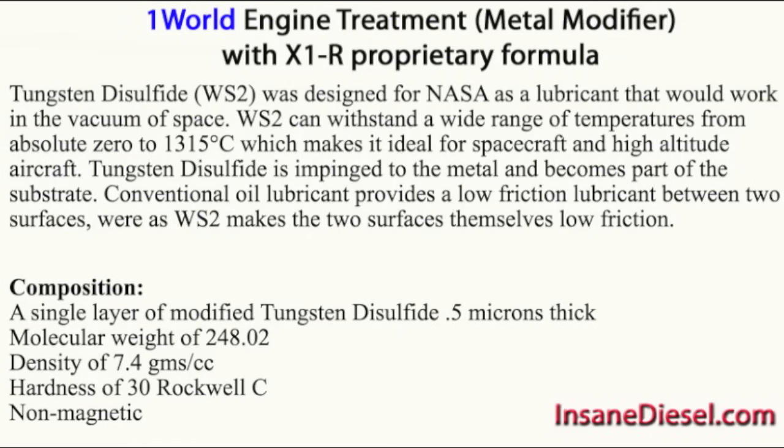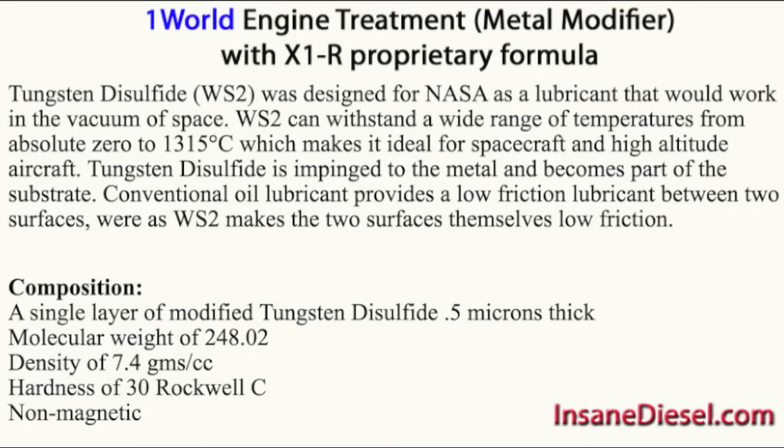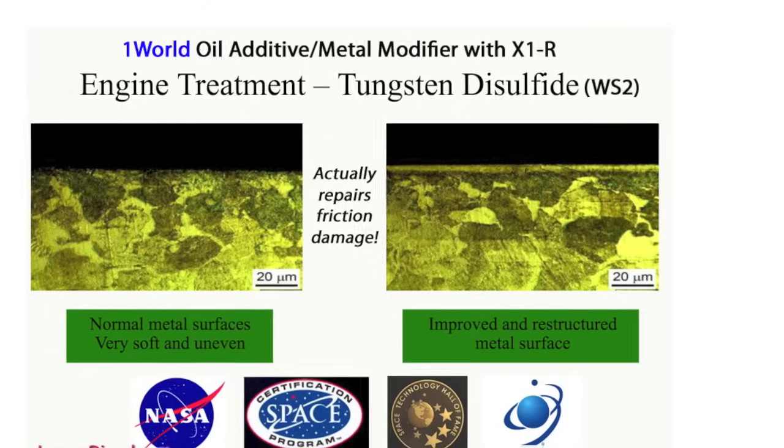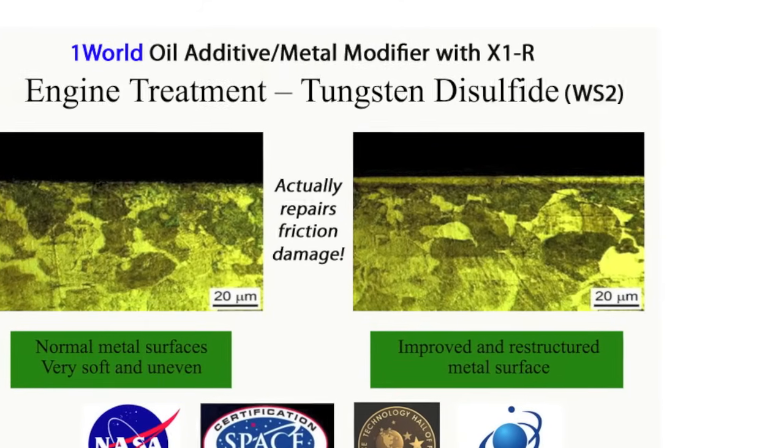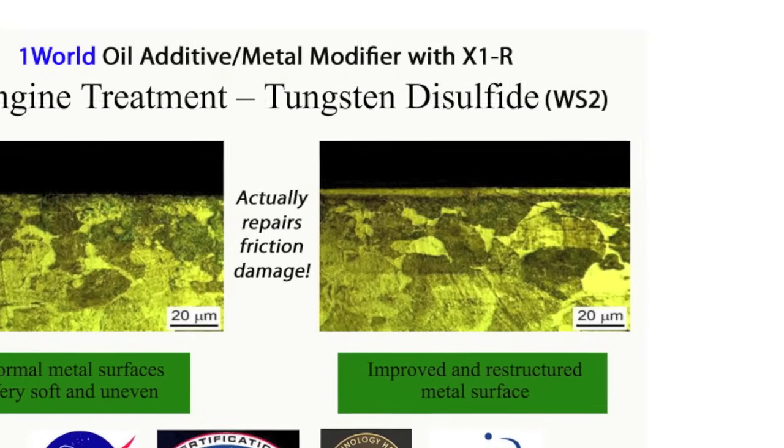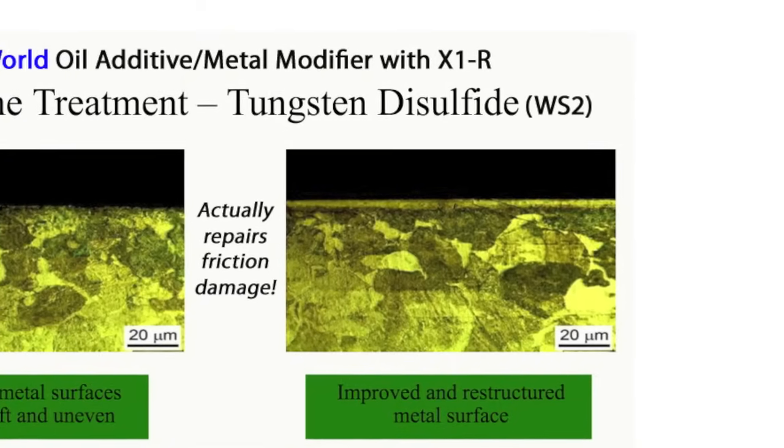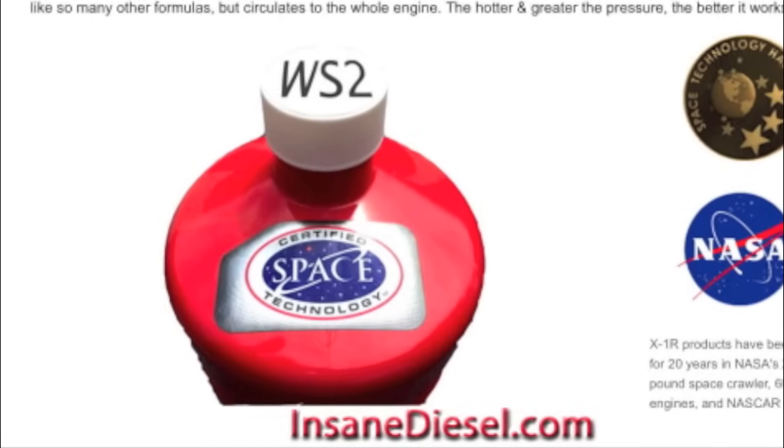Last but certainly not least, One World Engine Treatment is technically a metal modifier and utilizes an X1R proprietary tungsten disulfide formula that nanobonds with the metal surfaces in your engine. It actually impregnates the metal, creating a super hardened surface that is also highly lubricating. That can protect your cylinder walls from wear due to DPF regen mode as well as the bearings when soot and raw fuel get into your oil. It repairs some friction damage and protects your engine from cold starts. It can increase engine life by up to 47%.